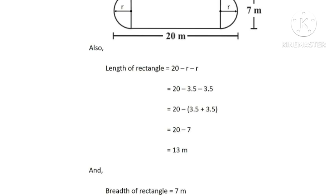Length of rectangle equals 20 minus r minus r, equals 20 minus 3.5 minus 3.5 equals 20 minus (3.5 plus 3.5) equals 20 minus 7 equals 13 meters. Breadth of rectangle equals 7 meters.